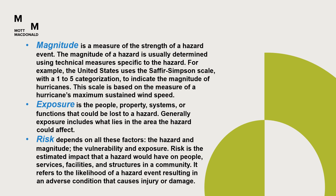Exposure is the people, property, systems, or functions that could be lost to a hazard. Generally, exposure includes what lies in the area the hazard could affect. Risk depends on all these factors — the hazard and magnitude, the vulnerability and exposure. Risk is the estimated impact that a hazard would have on people, services, facilities, and structures in a community. It refers to the likelihood of a hazard event resulting in an adverse condition that causes injury or damage.